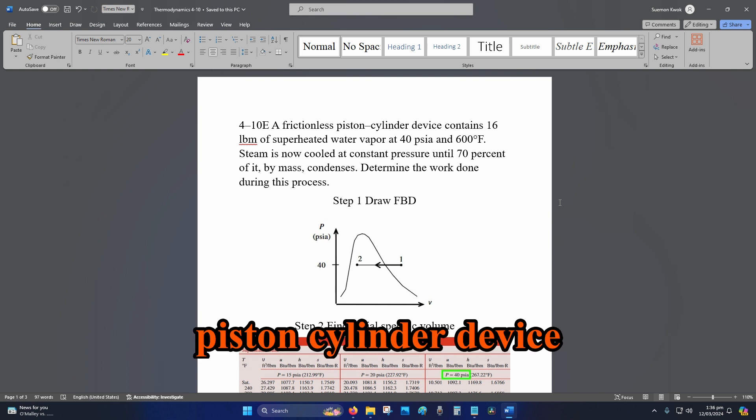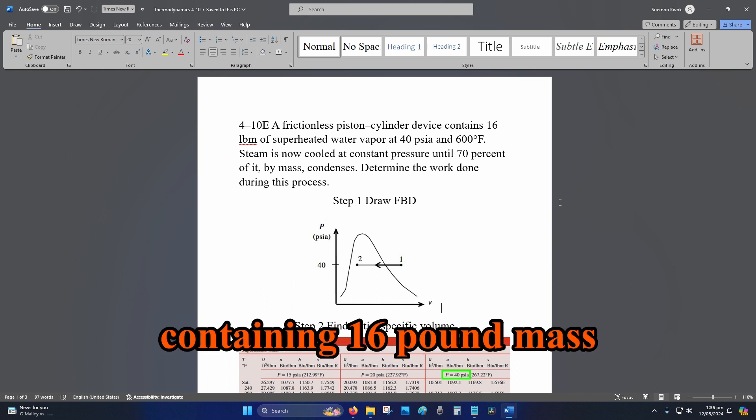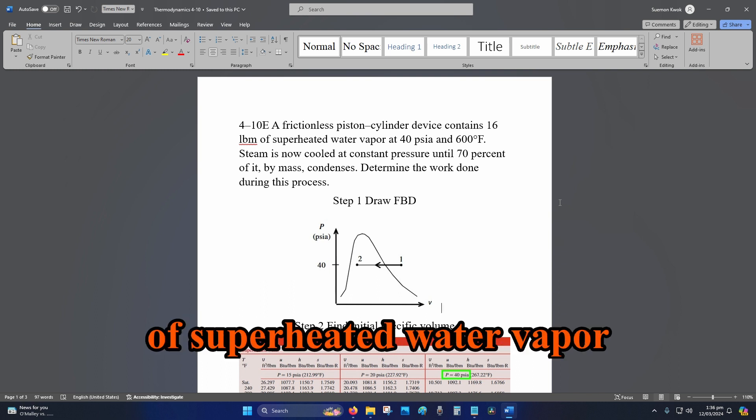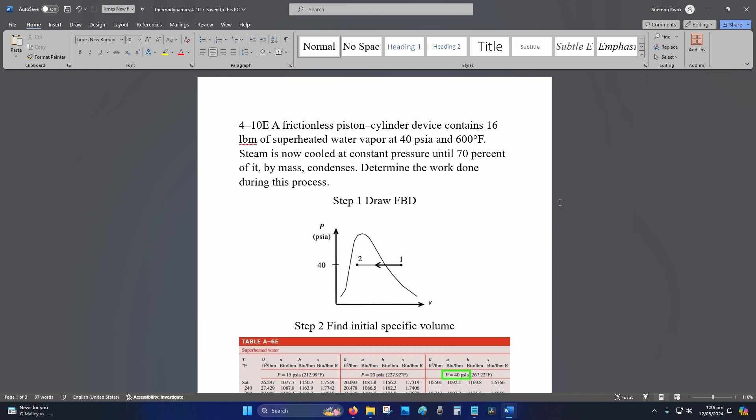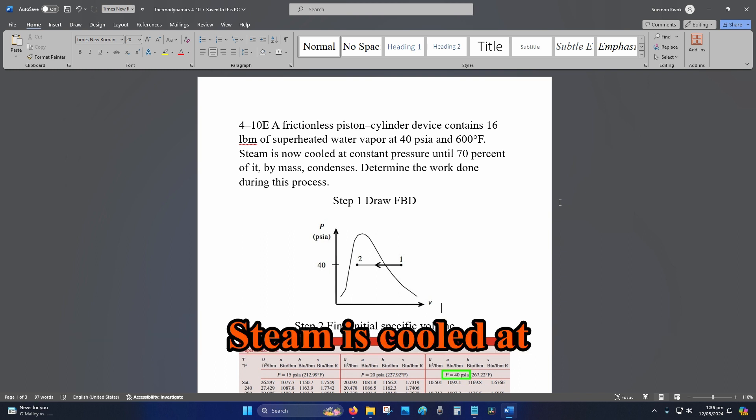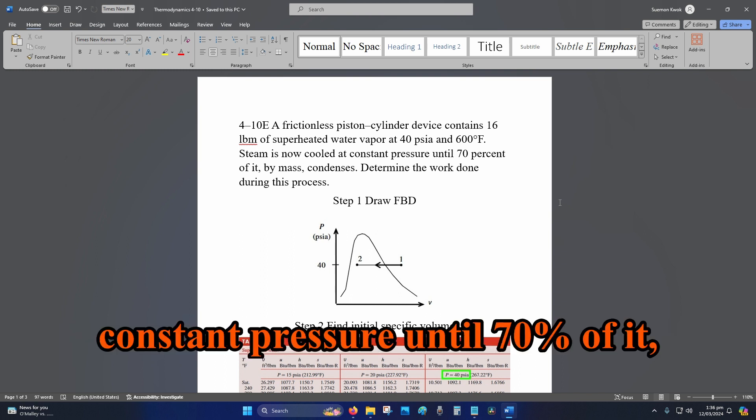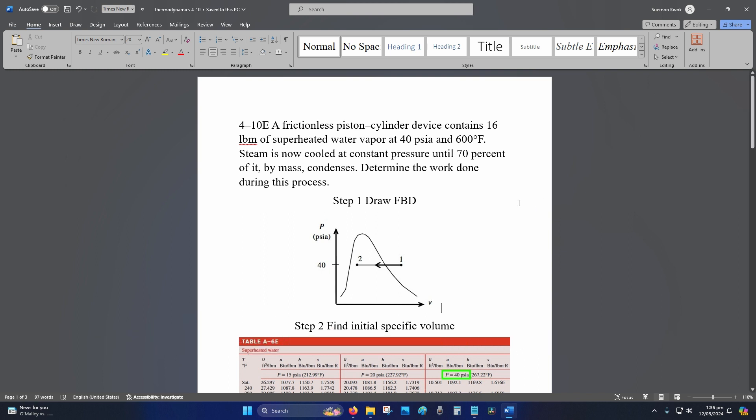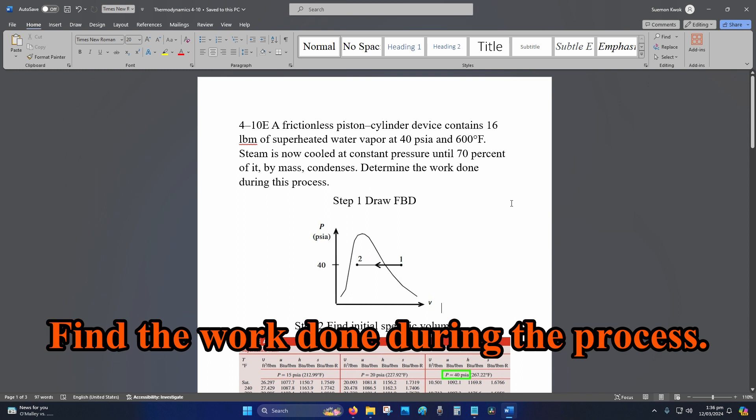We have a frictionless piston cylinder device containing 16 pound mass of superheated water vapor at 40 psia and 600 degrees Fahrenheit. Steam is cooled at constant pressure until 70% of it condenses. Find the work done during this process.